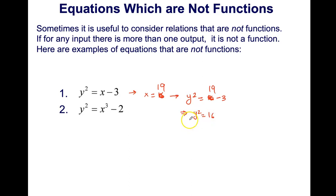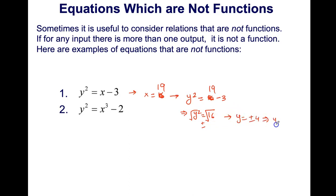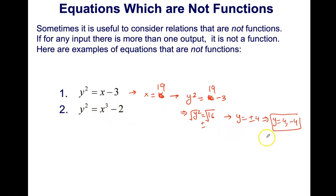Taking the radical on both sides — and keep in mind when you take the square root you get a plus and minus sign — my answer is y equals plus or minus 4. That gives two values of y: positive 4 and negative 4. Since a function must have exactly one y paired with each x, and we got two values, this equation is not a function.